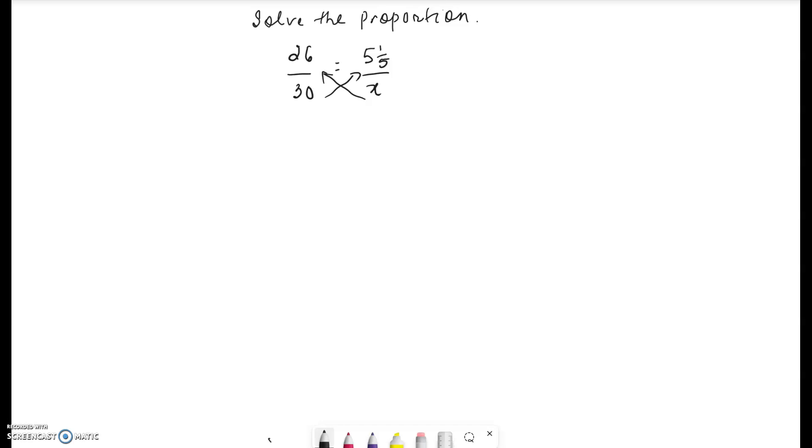So here we have a proportion which is an equation and we need to solve for x. X is the unknown and we have to solve for x. One way of doing this is by cross multiplying: it's 5 and 1/5 times 30.